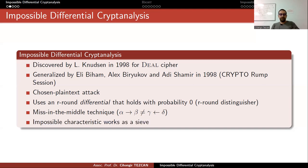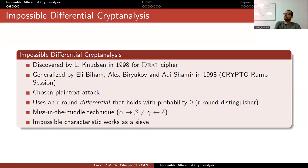The impossible characteristic works as a sieve when trying to recover the secret key. If you guess a round key and observe alpha and delta difference together, this cannot be correct, because the correct key can never produce such a distinguisher. So instead of keeping counters, you simply check if this impossible output is observed. If it is observed for a guessed key, then that key is wrong. If it is not observed, then it might be the correct one.